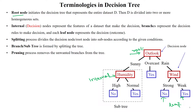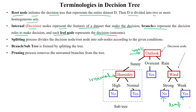The root node initiates the decision tree construction and represents the entire dataset D. The dataset D is divided into two or more homogeneous subsets. The internal nodes are called decision nodes, representing the features of the dataset that are useful to make a decision. The branches represent the decision rules — the criteria to make a specific decision.